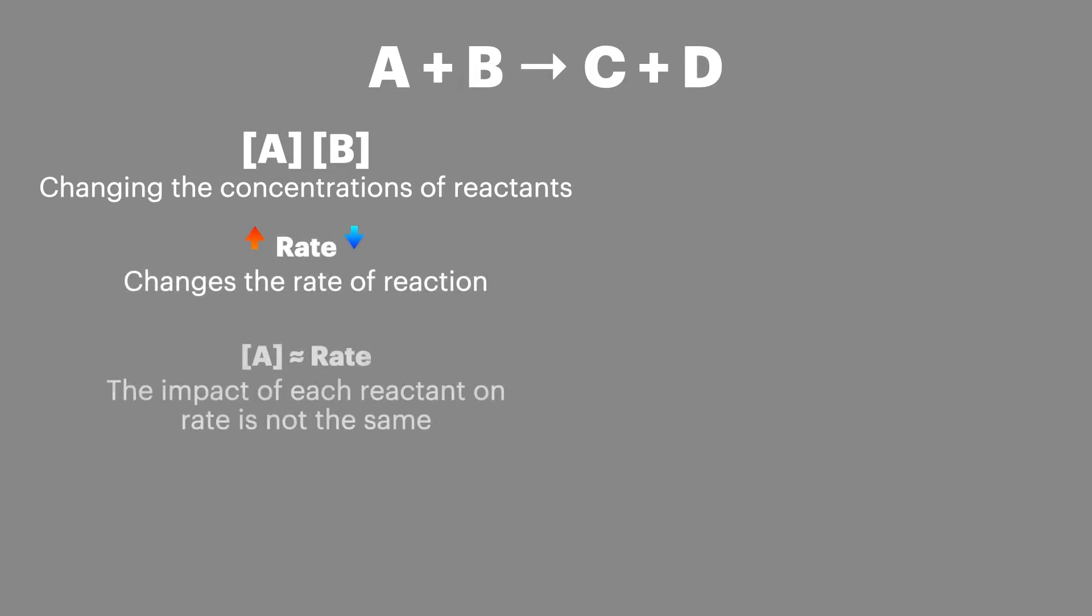Each reactant can have a different impact on the initial rate of reaction so we assign each reactant an order. This is the measure of the individual impact on the initial rate of reaction. If you're not sure what the initial rate of reaction is go back and watch my video previously. These orders are relatively straightforward to understand.